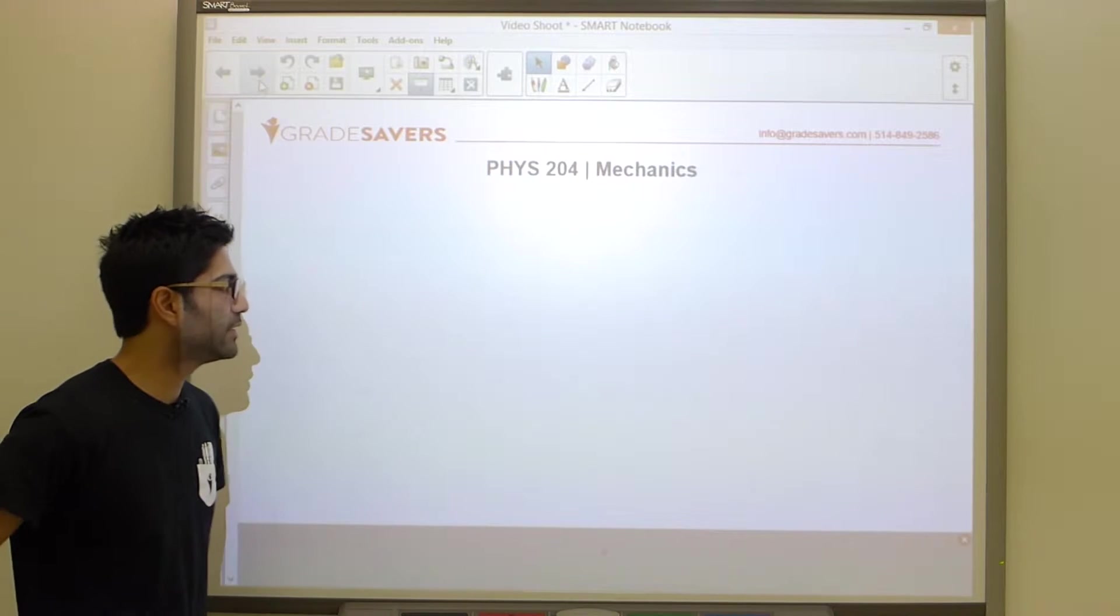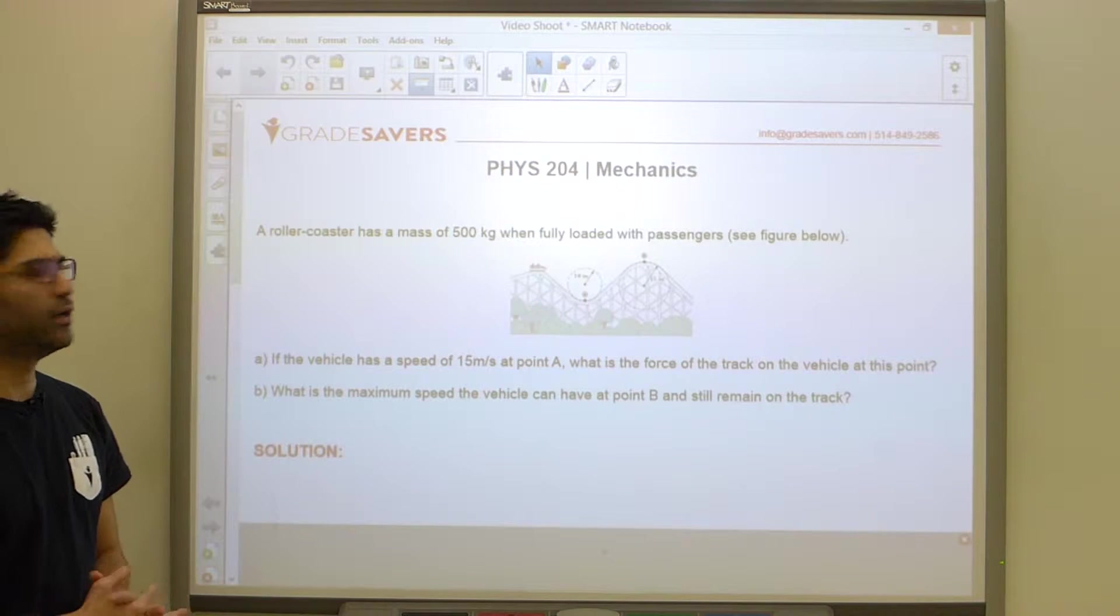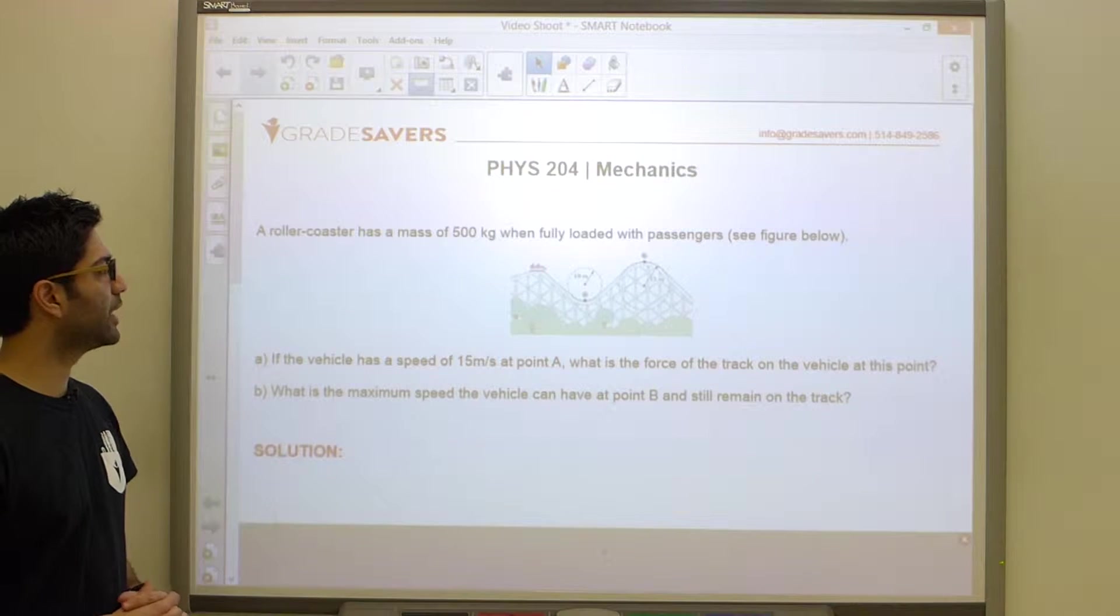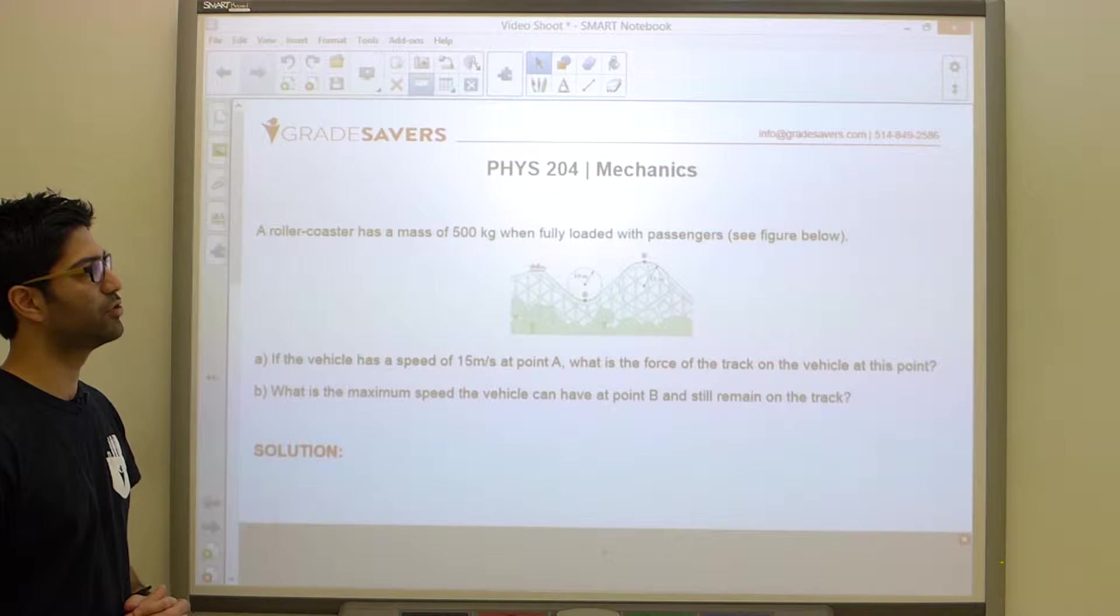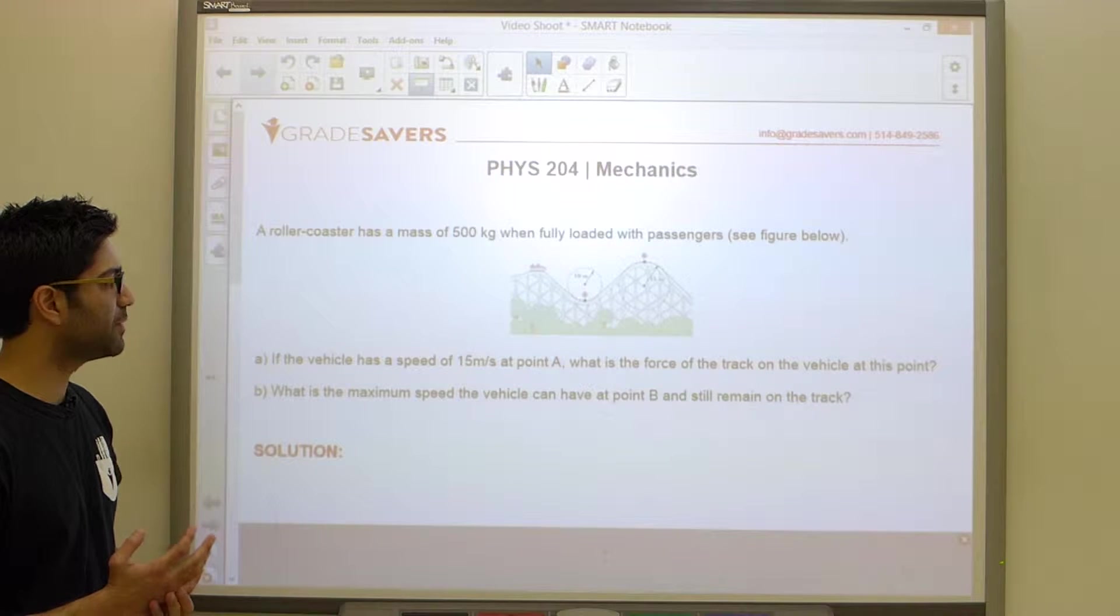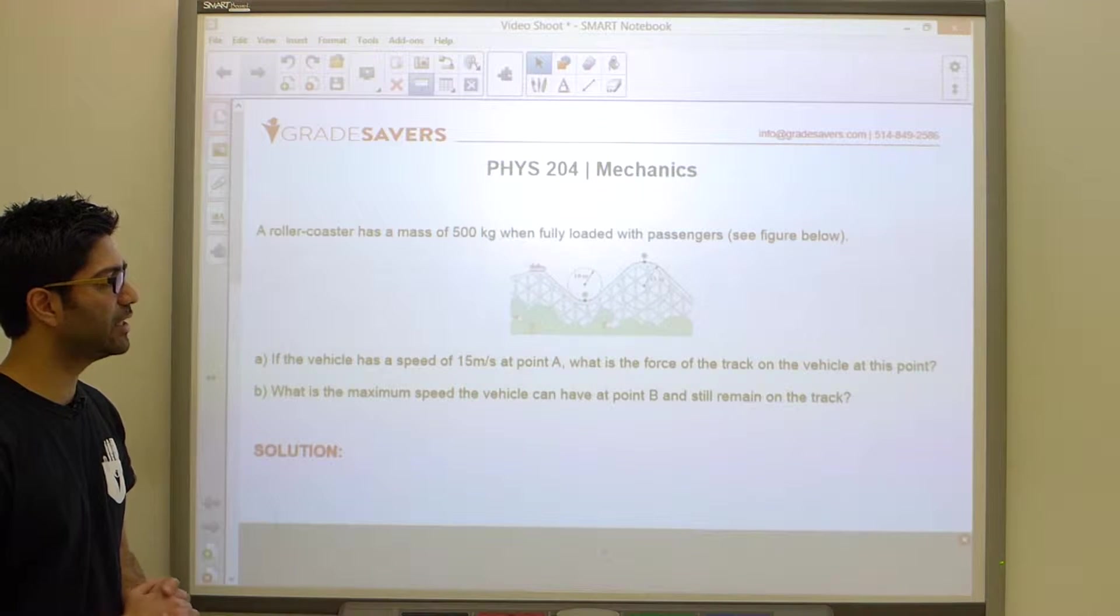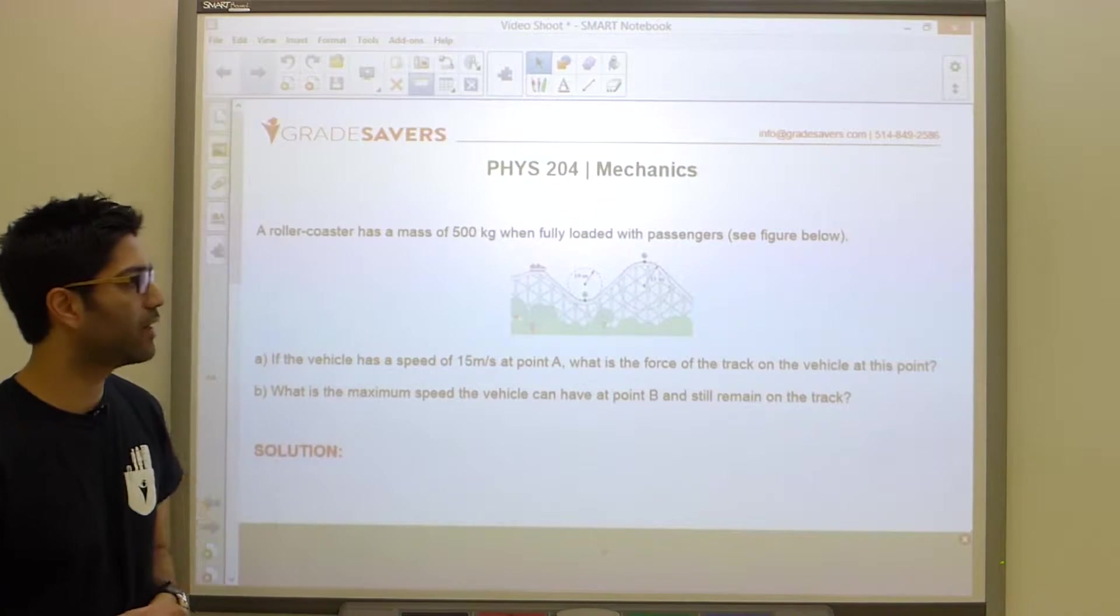All right guys, let's take a look at our next problem. A roller coaster has a mass of 500 kilograms when fully loaded with passengers. If the vehicle has a speed of 15 meters per second at point A, what is the force of the track on the vehicle at this point?